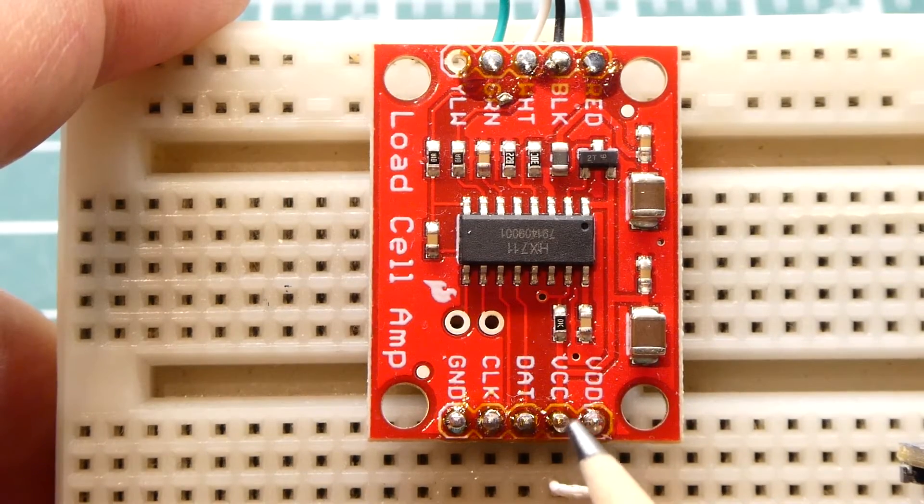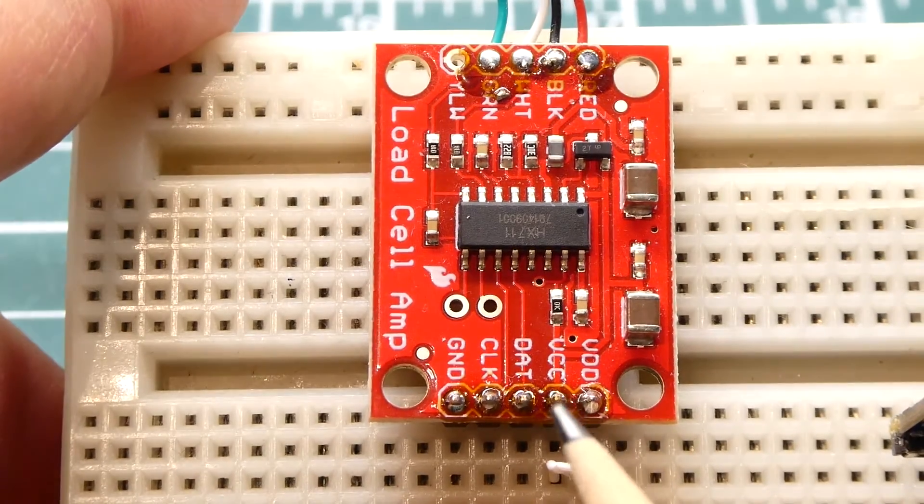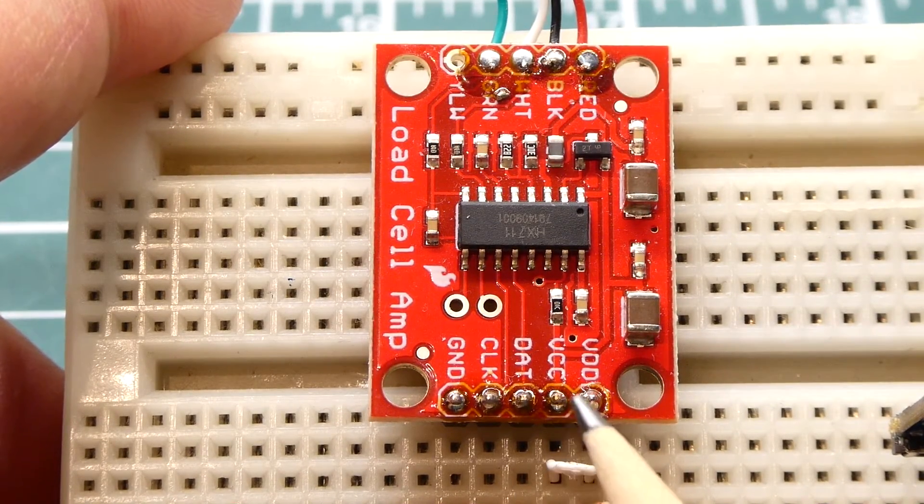The next one is VCC, that's the excitation voltage which is feeding the Wheatstone bridge and I'm using 3.3 volts. You can see I have those two pins jumpered together and I'm feeding 3.3 volts to both.